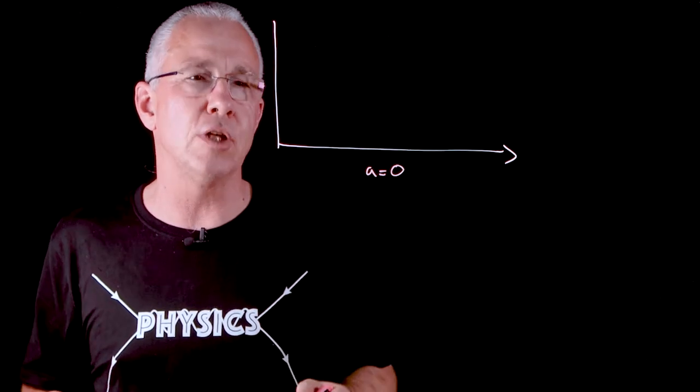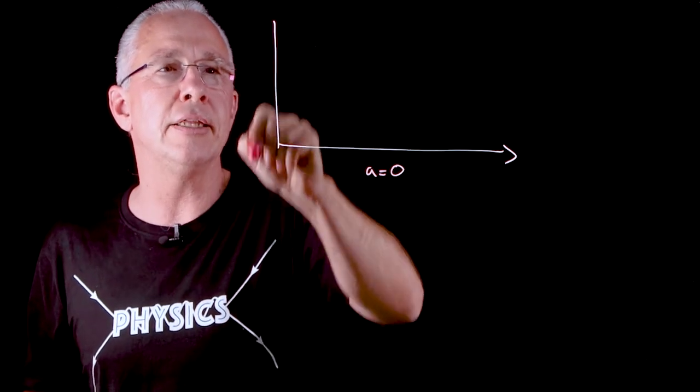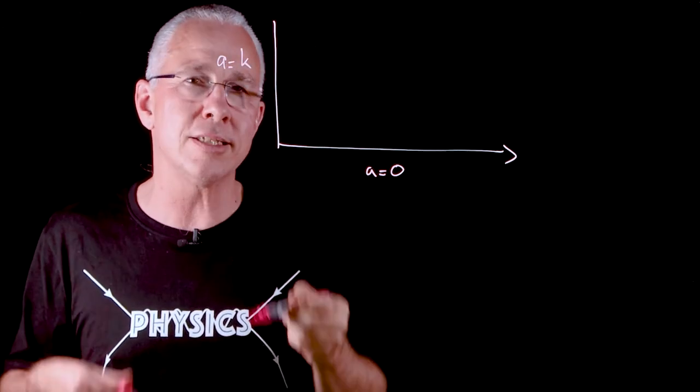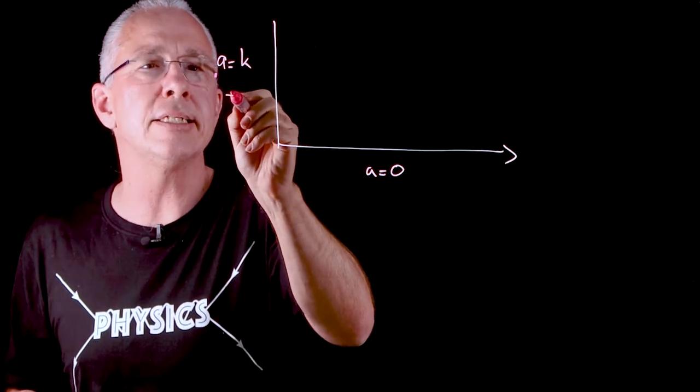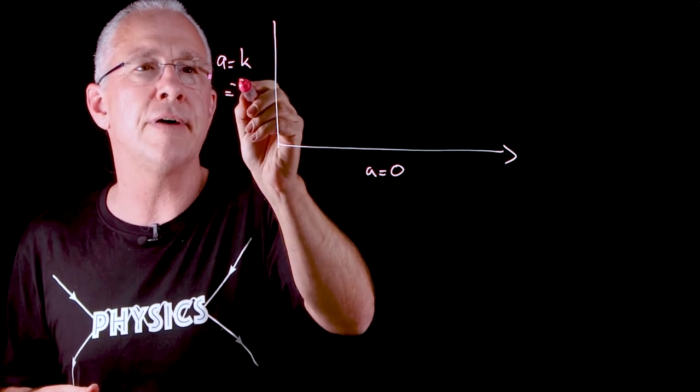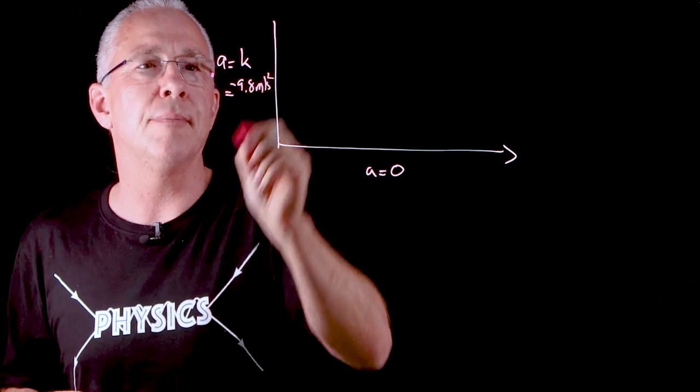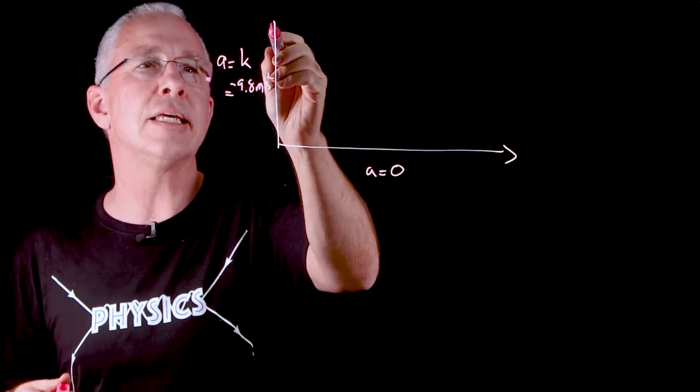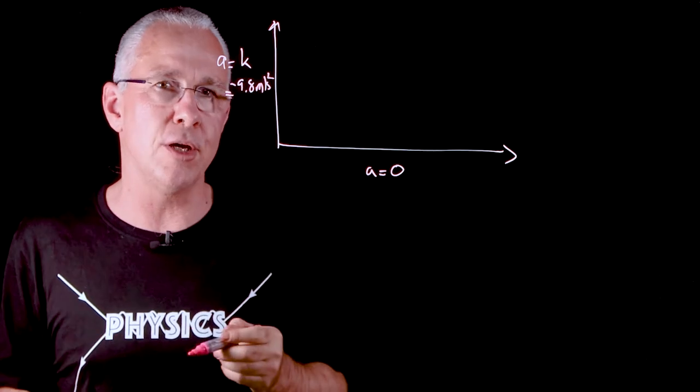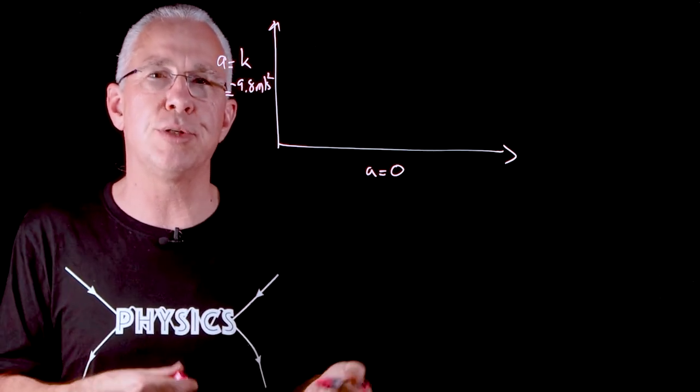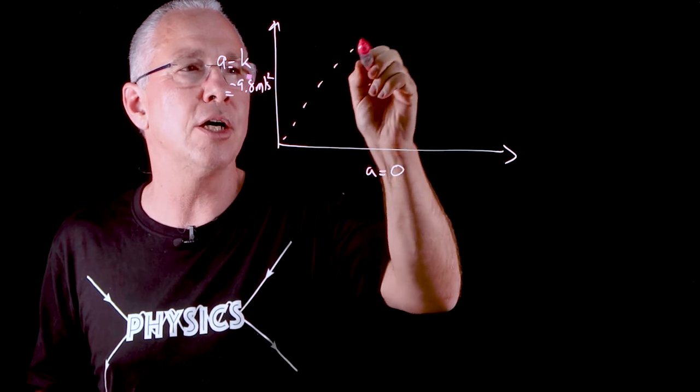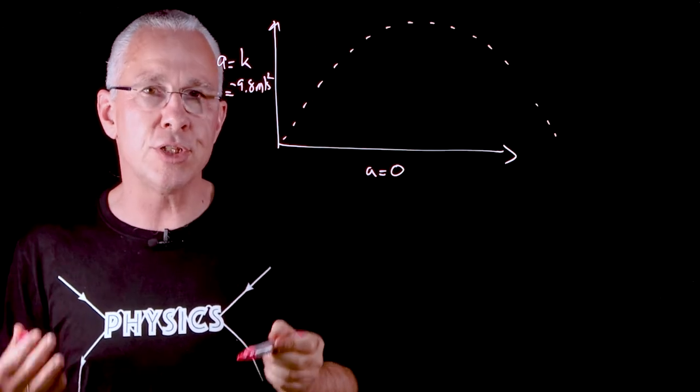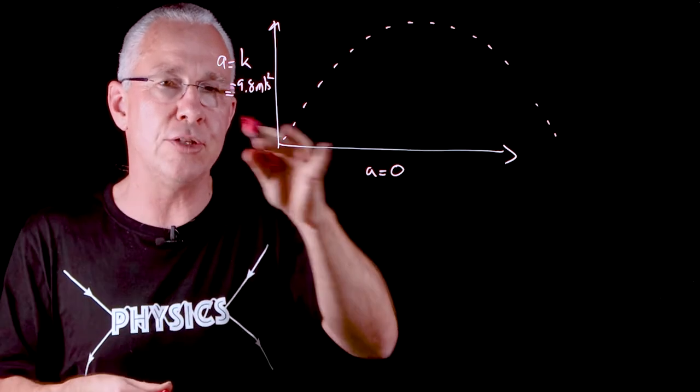We say it's constant velocity and then we also have a motion in the vertical where the acceleration is some sort of constant and generally speaking that ends up being in most cases the value of the acceleration due to gravity which is negative 9.8 meters per second squared. And that means that if we have those two types of motions the object undergoes projectile motion and as a result undergoes what we call a parabola.